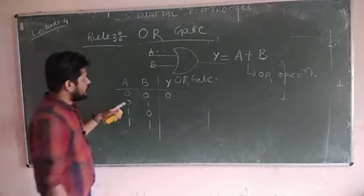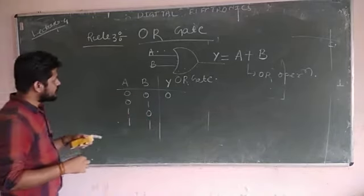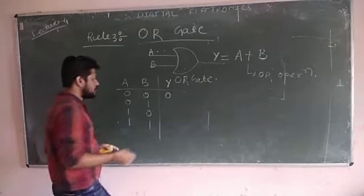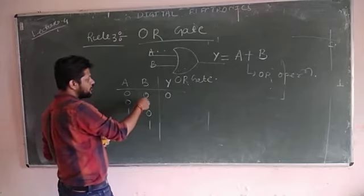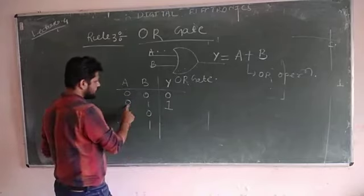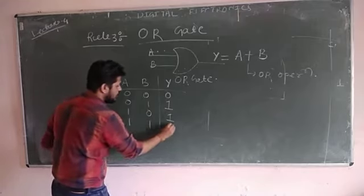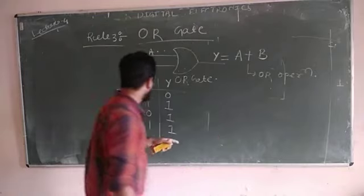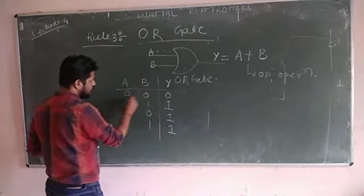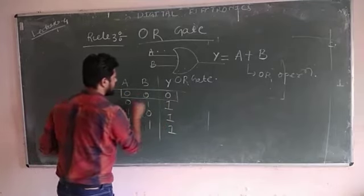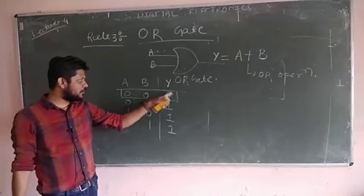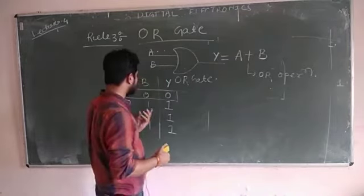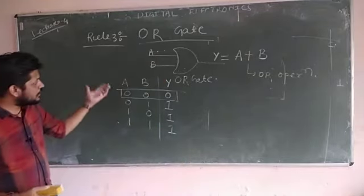The truth table for the OR gate: four possible combinations are 00, 01, 10, 11. The OR gate will produce output 0 only when both the inputs are low — that means when both A equals 0 and B equals 0. The OR gate is represented mathematically in Boolean algebra by the plus sign: A plus B, where the plus sign indicates the OR operation, not arithmetic addition.